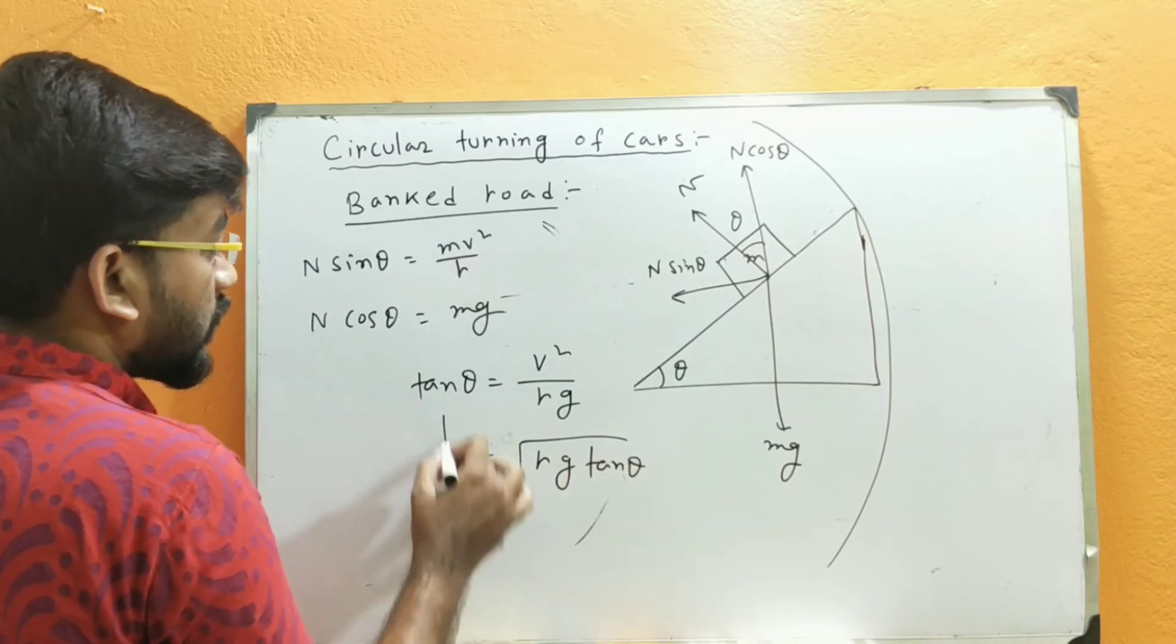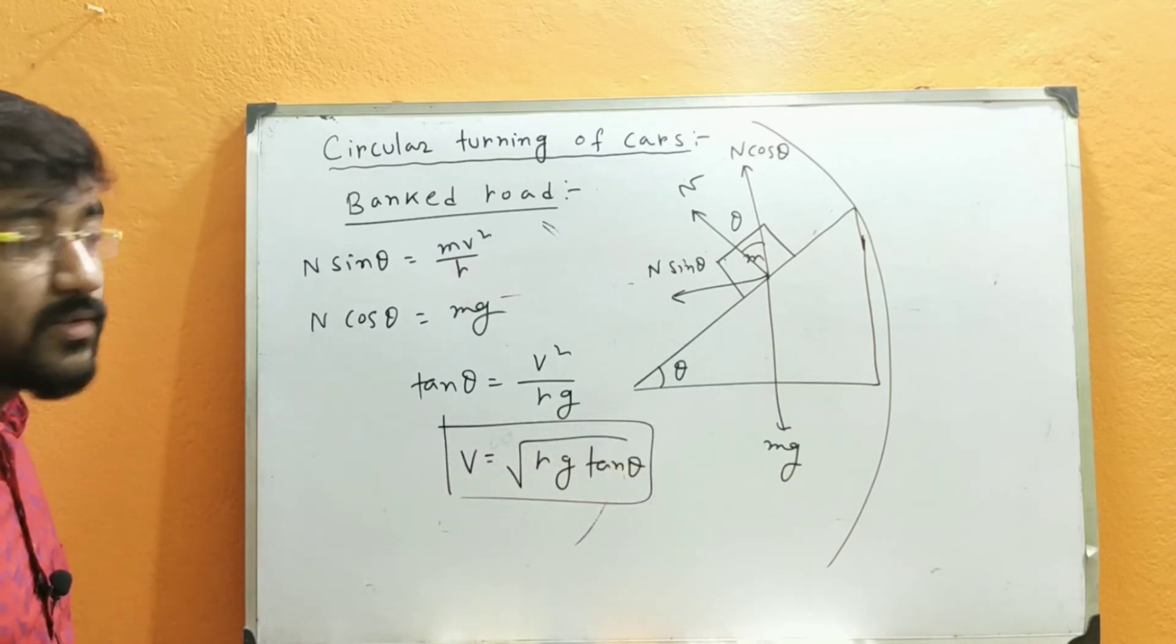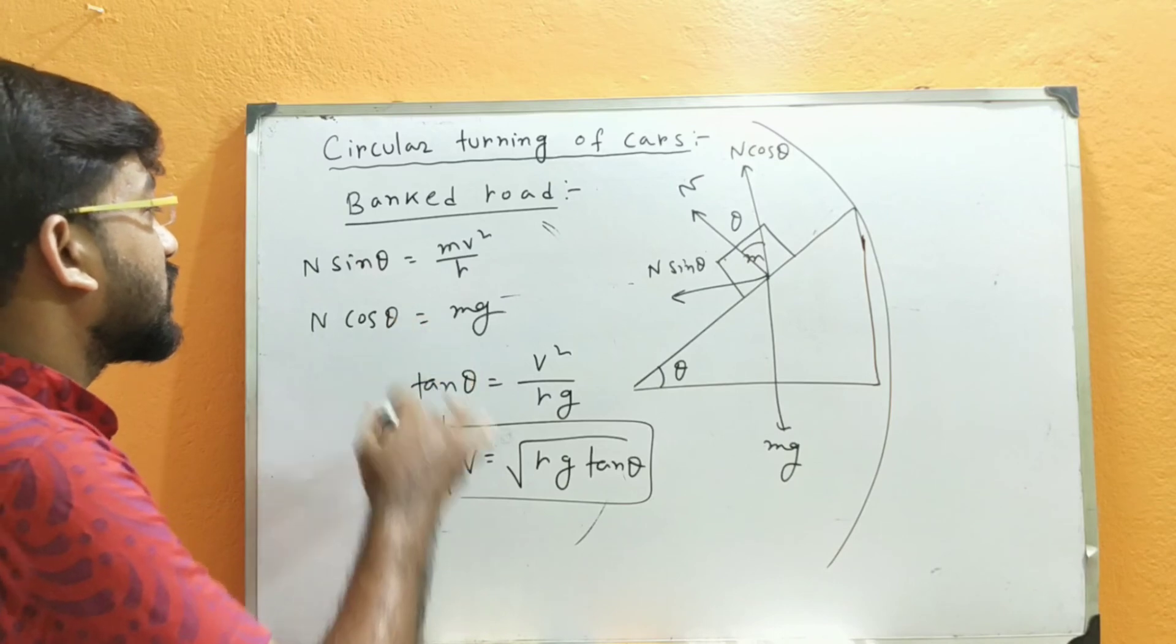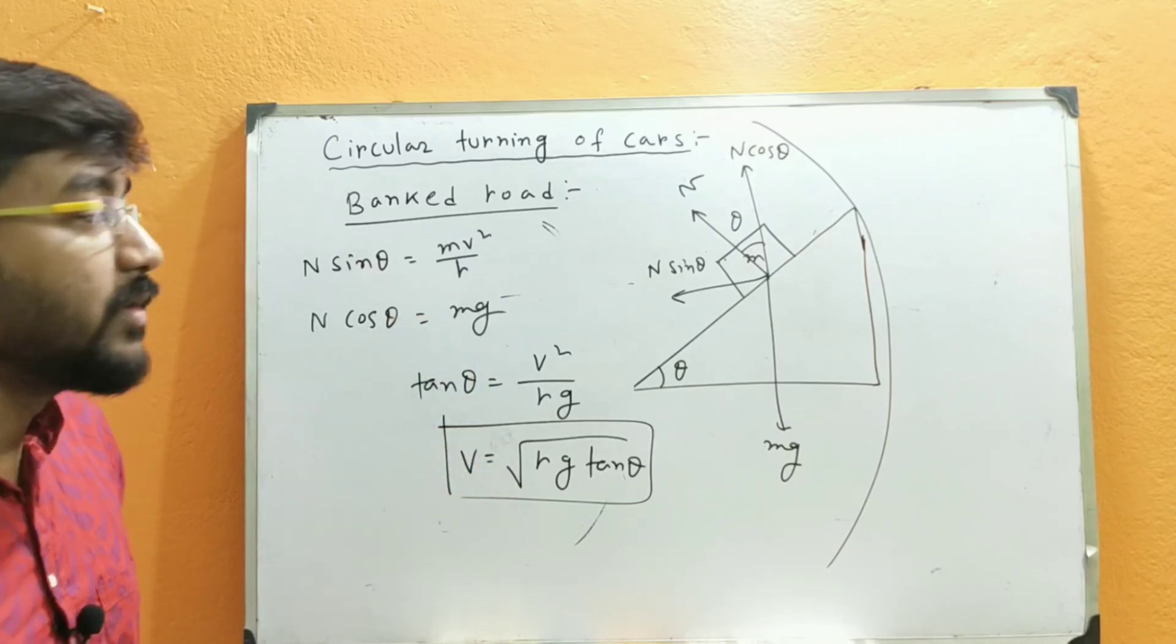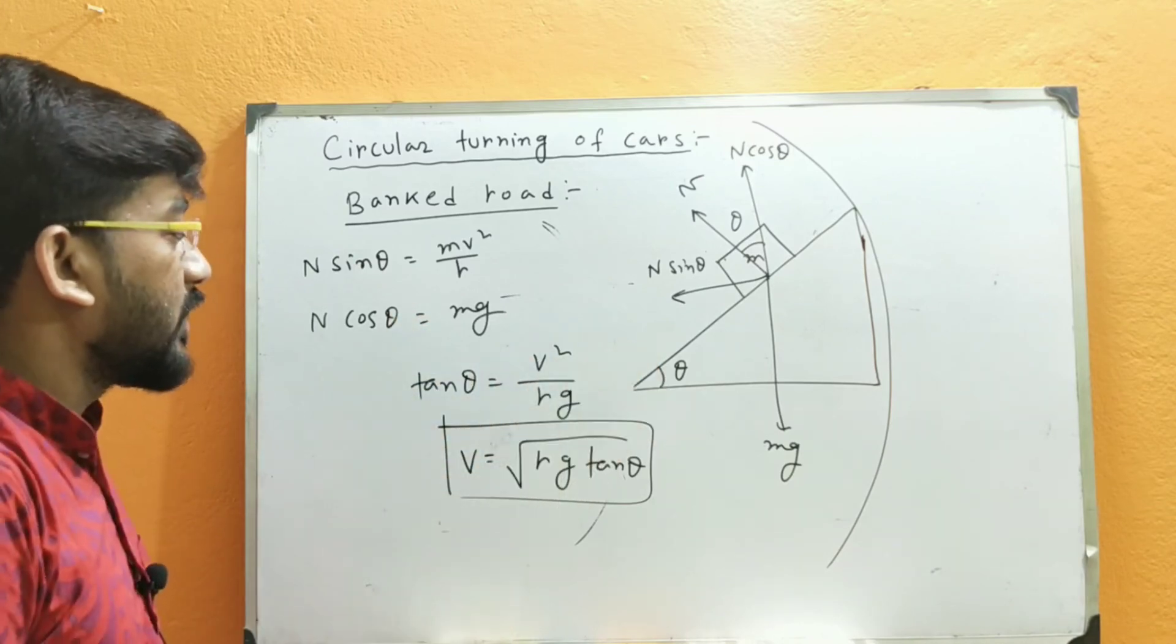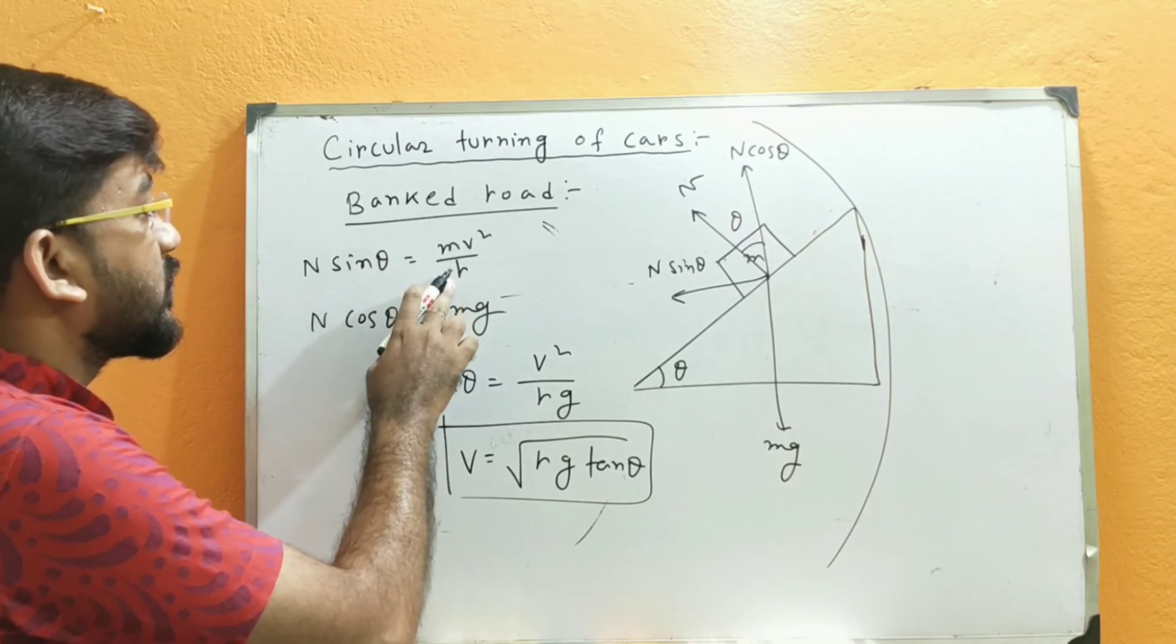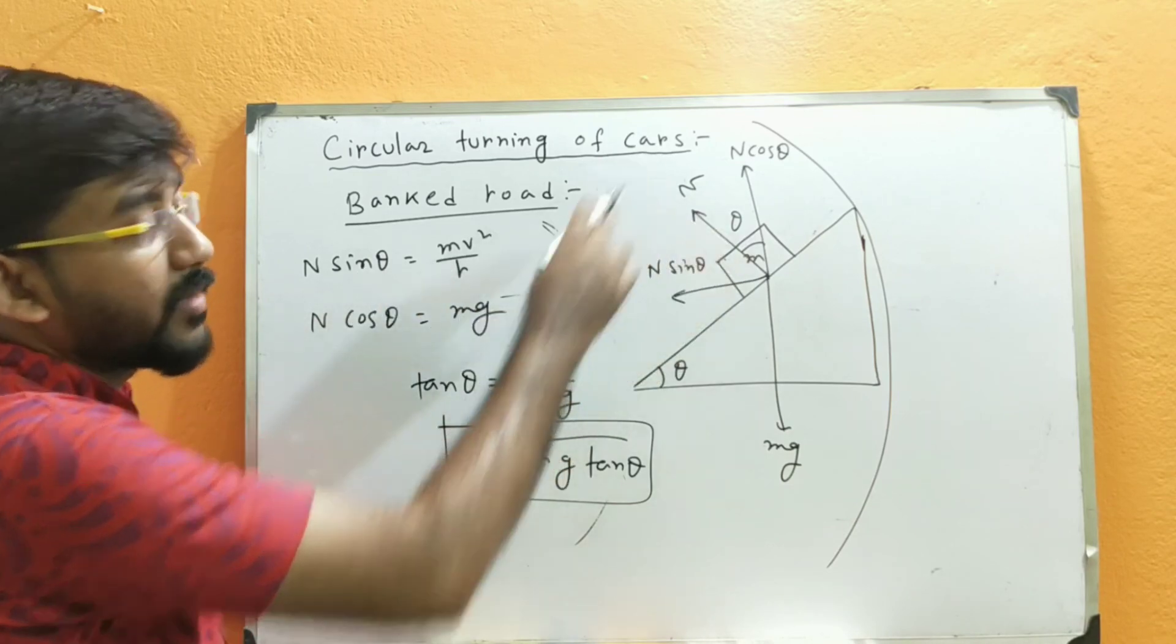This is the condition when the road is smooth with no frictional force. In that case, this is the situation for the banked road only, and here the centripetal force is provided by the component of the normal reaction N.